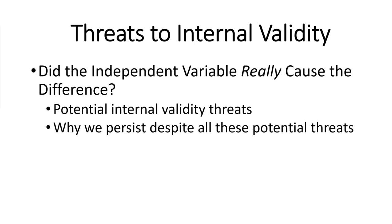We're going to start with threats to internal validity — asking whether the independent variable really causes the difference we're seeing. First we'll look at potential internal validity threats, including some new ones we should always keep in mind. Then, after talking about all these potential flaws in experiments, we want to discuss why we actually persist with experiments despite all of these potential threats. That's our outline.